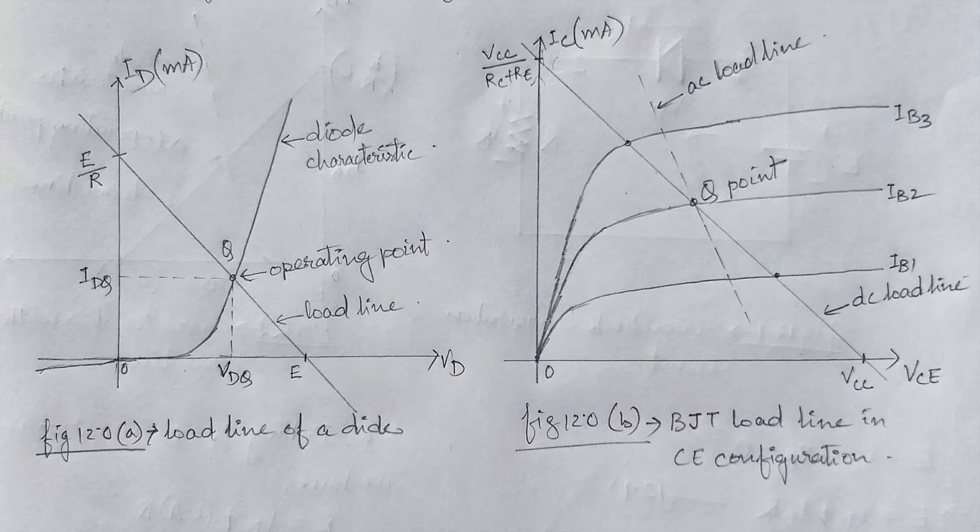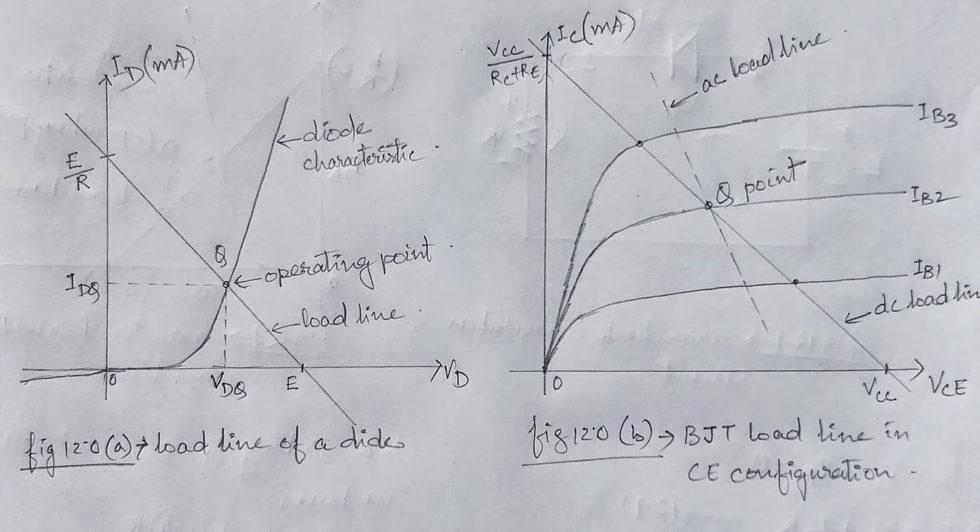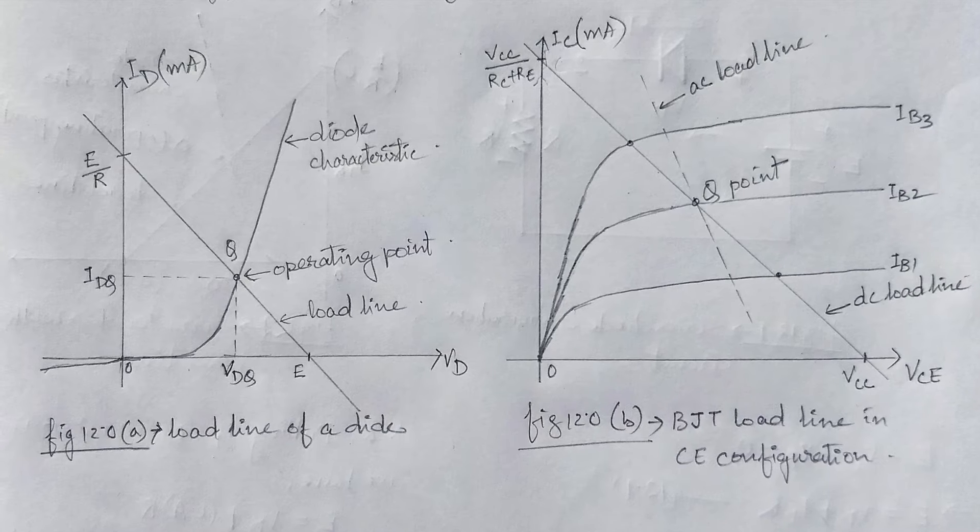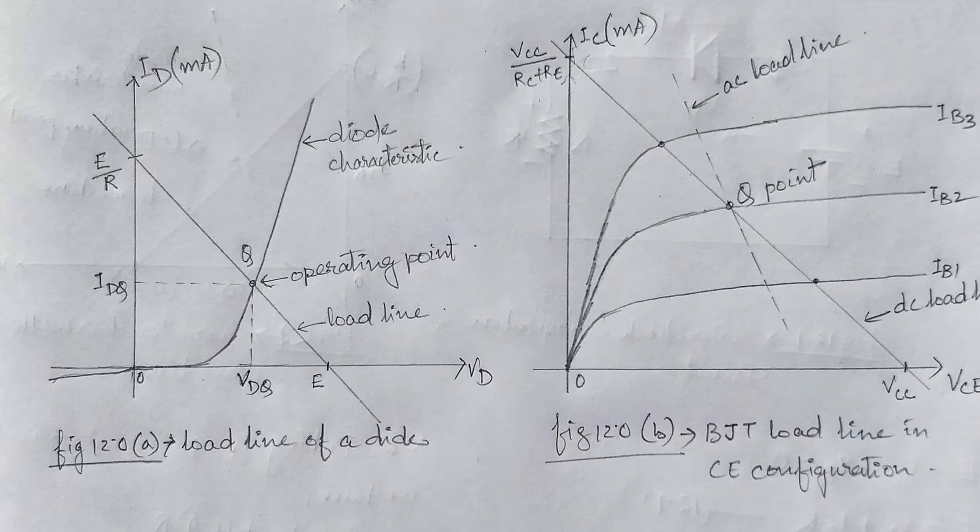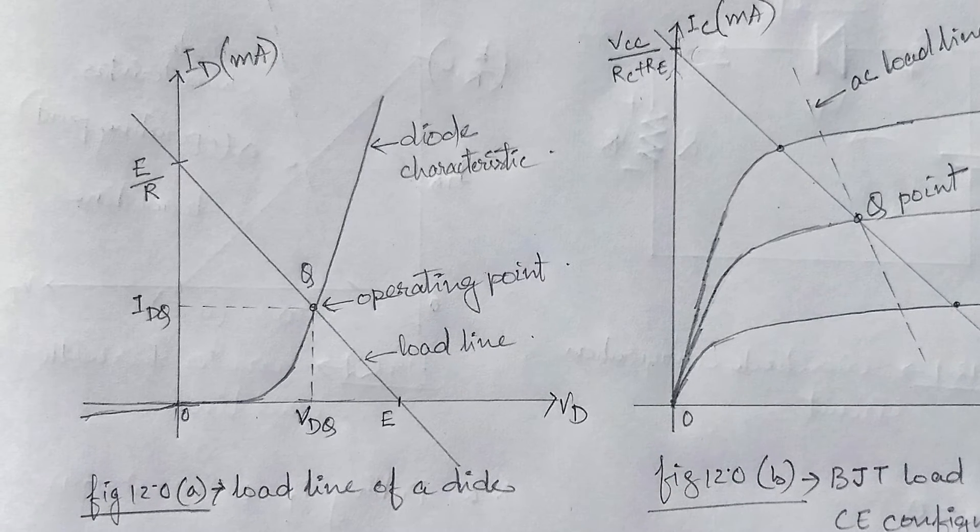Let us start with what is a load line. A load line is usually a straight line which represents the response of the linear part of the circuit. It also represents the constraints put on the voltage and current in a non-linear device by some external circuit.